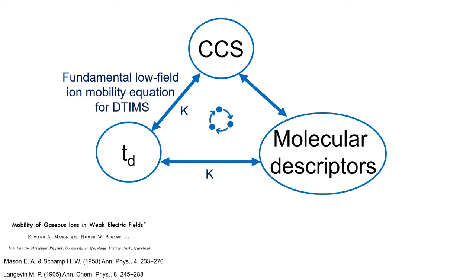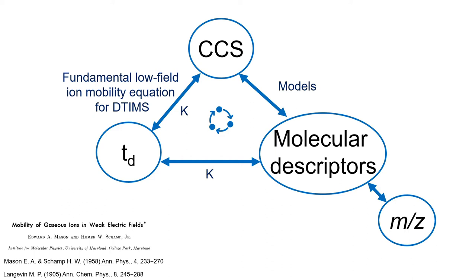The fundamental low-field ion mobility equation is also known as the Mason-Champ equation, from the physicists Mason and Champ who studied the mobility of ions exposed to electric fields. Although this equation dates back to 1905, when Langevin obtained an equivalent relationship for ion mobility in weak electric fields — work that went largely unnoticed for a while. We should emphasize that a similar relationship linking experimental drift time and CCS is not fully available for different types of ion mobility so far. We can arrive at CCS values through molecular modeling, but as all models, these are estimations.